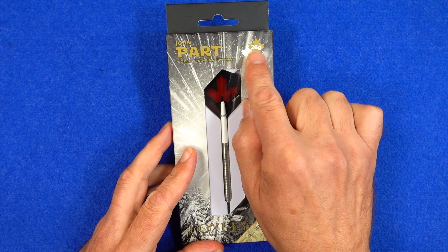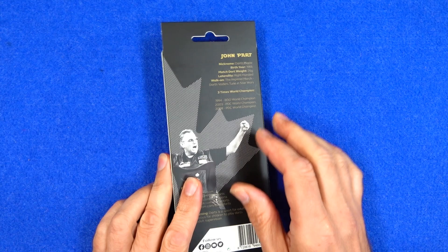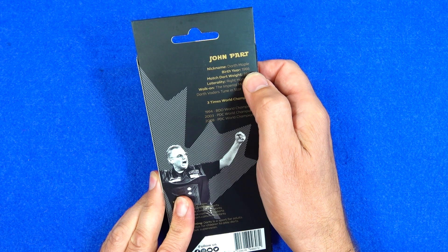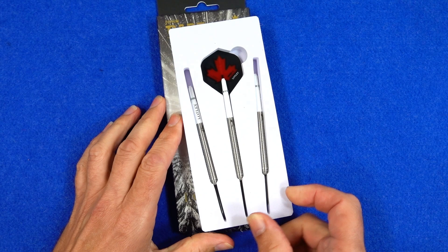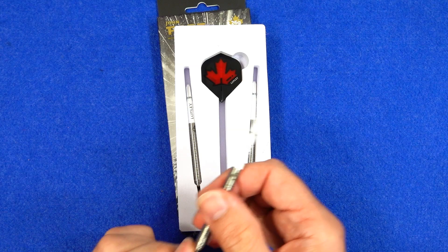And on the back, just tells you about John Part, a little bit of a bio, and also the three times he's won the world championships. So some nice little touches there. Inside, you've got a foam inset holding the darts in place. And they come supplied with the Loxley short nylon stems and a set of the maple leaf John Part Loxley standard flights. Quite a nice flight that.